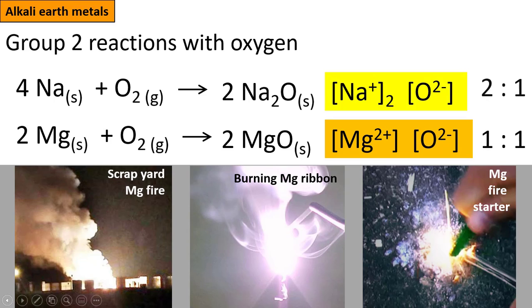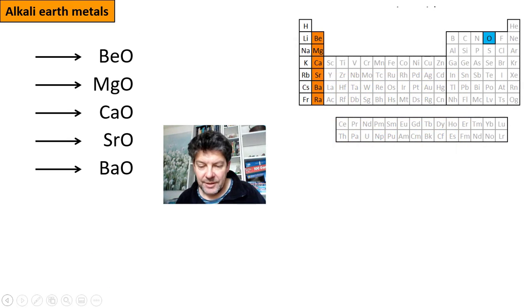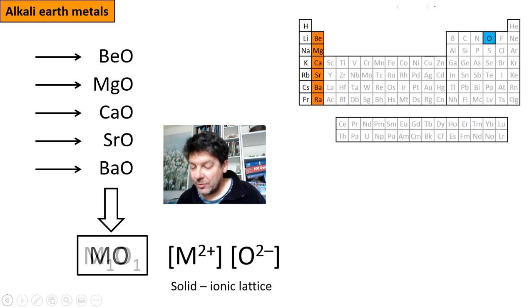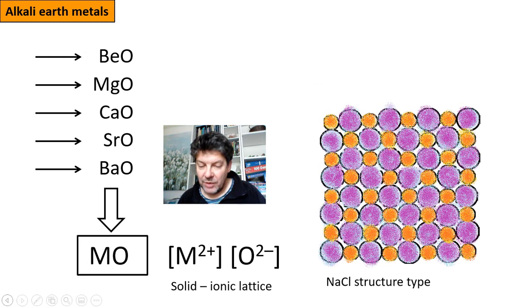For the rest of this group, the chemistry is very similar. They all show oxides with the same stoichiometry. They all show oxides that are ionic solids. In fact, with the exception of beryllium, they all have the same type of structure. It is the same arrangement of the ions as in sodium chloride. It's just that the charge on each ion is doubled.